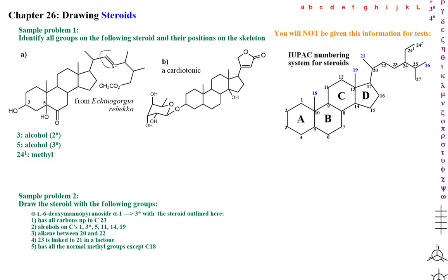This double bond is E, and it's between carbons 22 and 23. There's our 24-1 up there. We called one of them 26 and one of them 27 — I'm flexible in grading this, you can call either one 26 or 27. There is an acetate ester off of — let's call it 27.